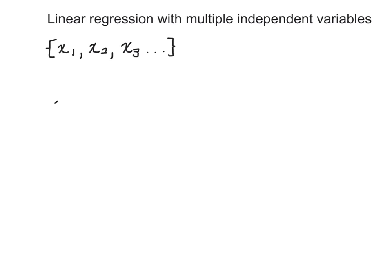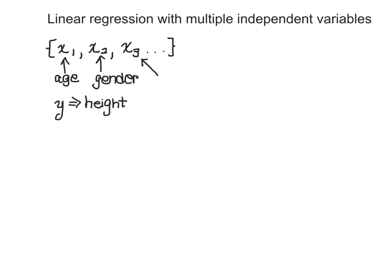Let's imagine that y represents the height of a person. Our first independent variable could represent the person's age, our second independent variable could represent the person's gender, and our third independent variable could represent the person's country of origin, and so forth.